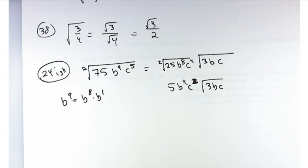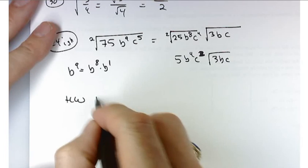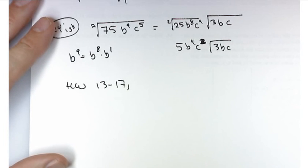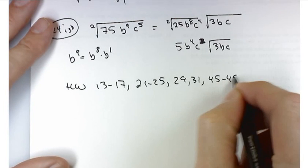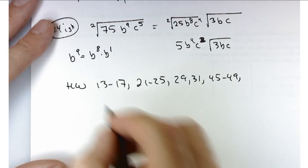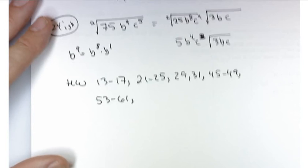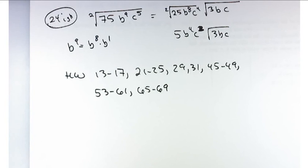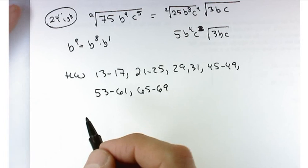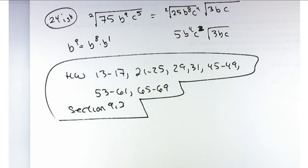So let me give you a complete homework list for this section. For homework, try 13 through 17, 21 through 25, 29, 31, 45 through 49. I'm being really picky here because I don't want you having to deal with really high powers of radicals, radicals with a high index. And then 65 through 69. I'm not sure that's a whole lot more than we assigned the other day, but it should keep you busy between now and Wednesday. So that's section 9.3.